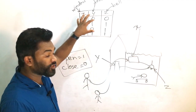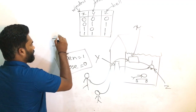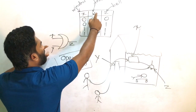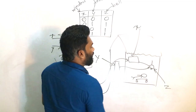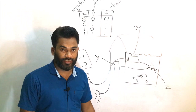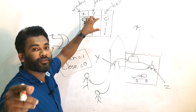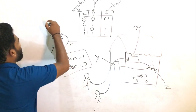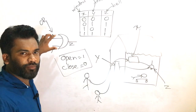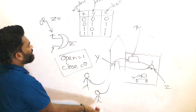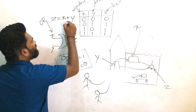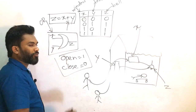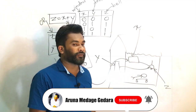This is called the truth table of the OR gate. Here X is the window, Y is the door, and Z is the bell. This is the real world concept and this is the truth table related to the OR gate. We can write a Boolean expression as Z = X OR Y. This is the symbol for the OR gate.